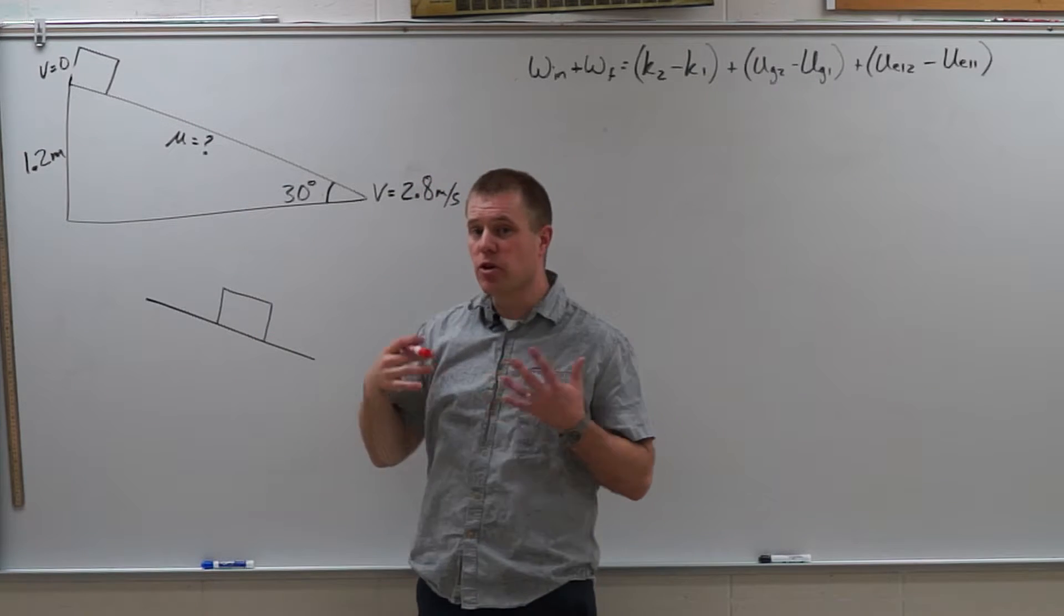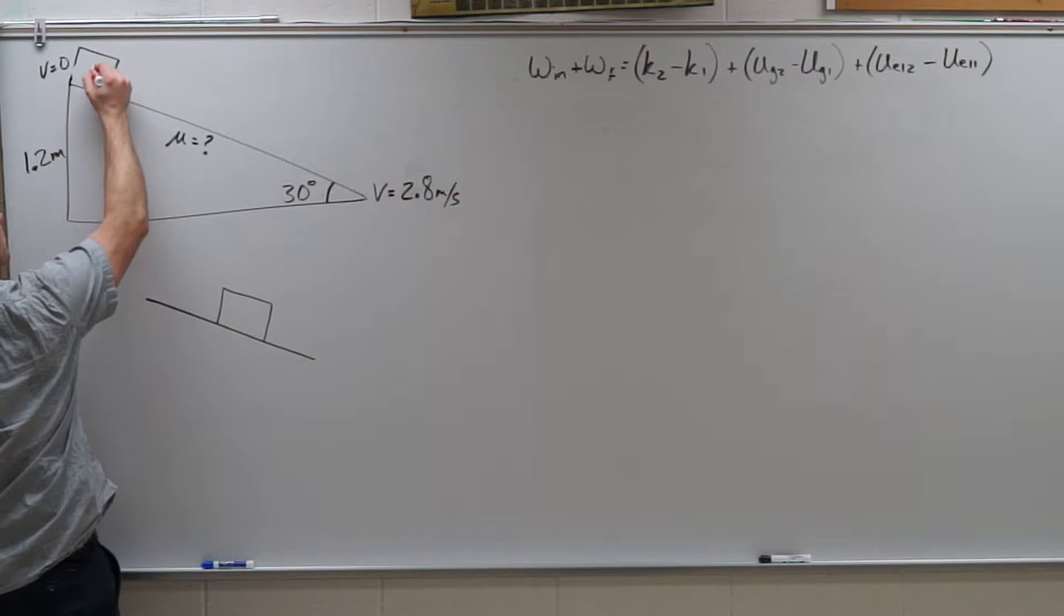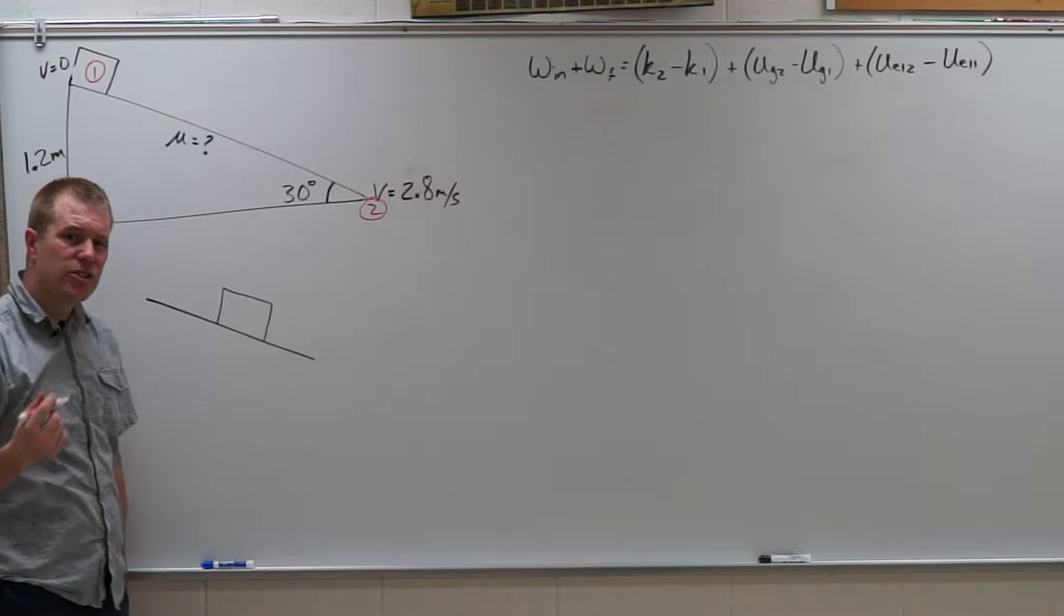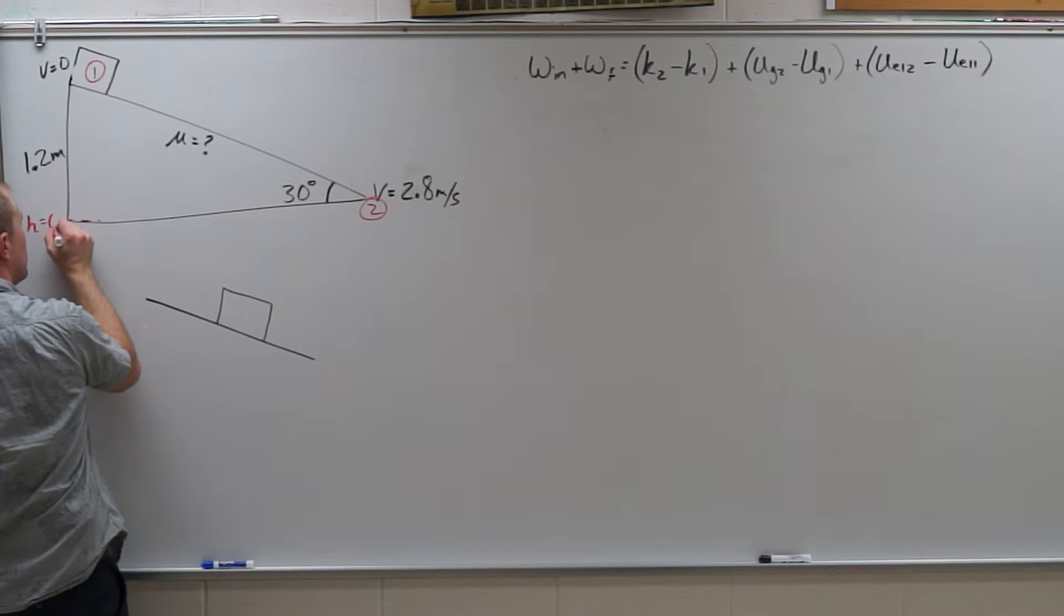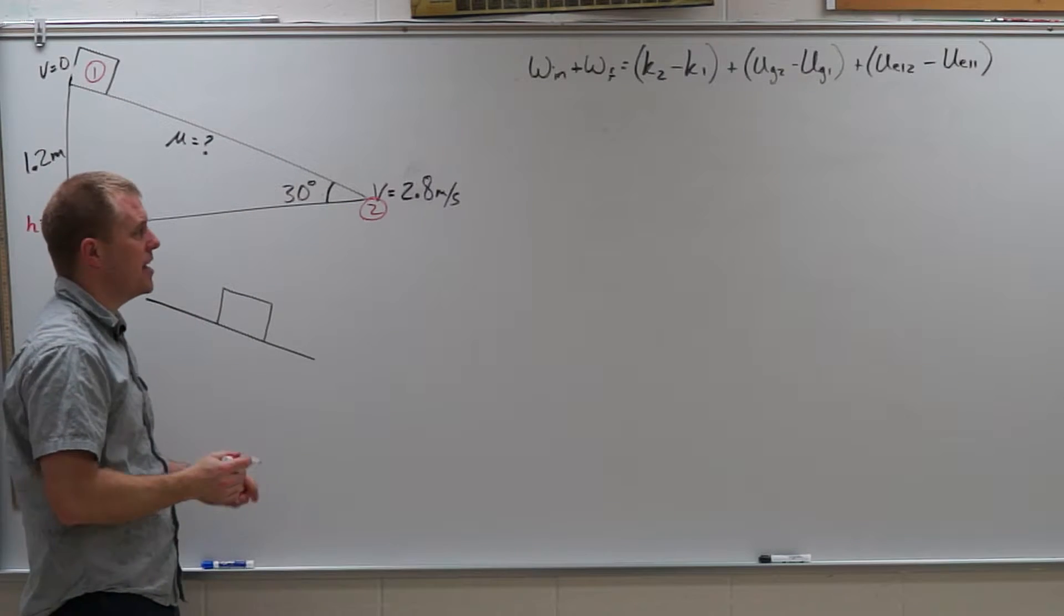So I'm going to do a work kinetic energy theorem problem. I start at point 1 up at the top, I end at point 2 at the bottom. I also have to choose where is the height going to be zero. So my height is going to be zero down here at the bottom. I always want to choose the lower of my two points as height equals zero.